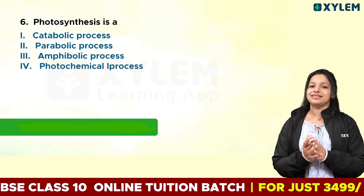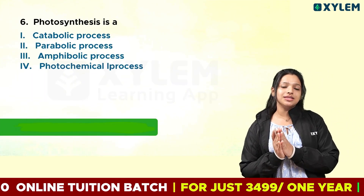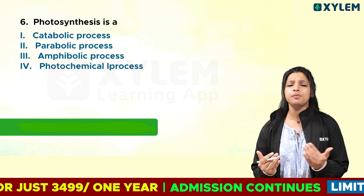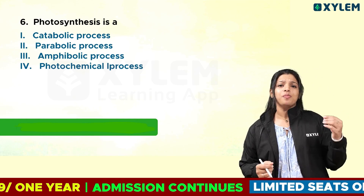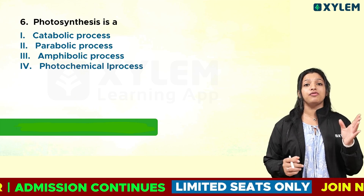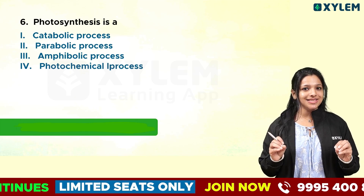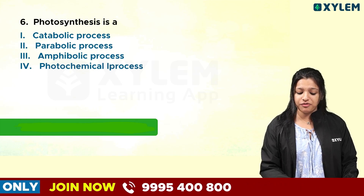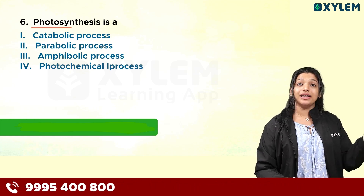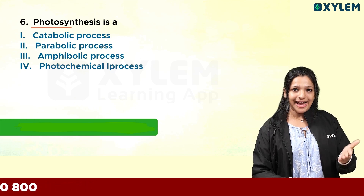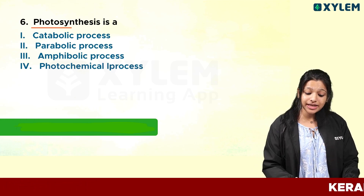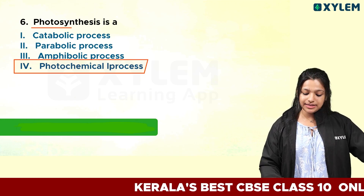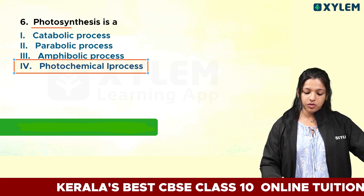Let's talk about photosynthesis. What is photosynthesis? The options are catabolic process, anabolic, amphibolic, or photochemical process. Photosynthesis is a light process — it converts light energy to chemical energy. Therefore, it is a photochemical process. Very important.